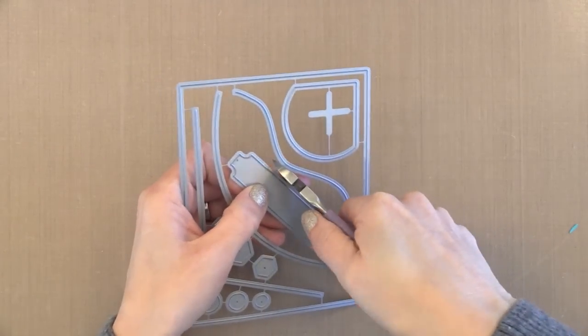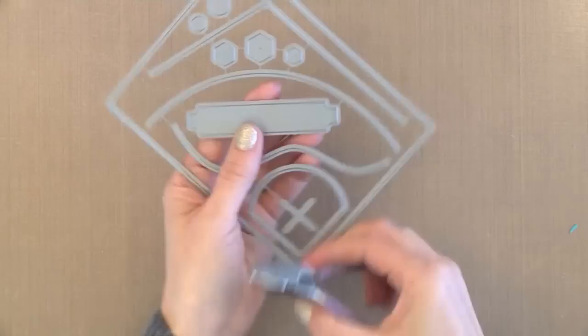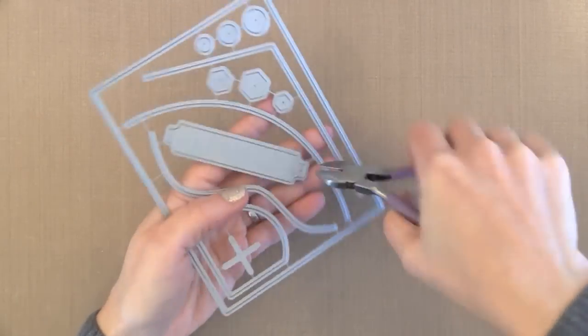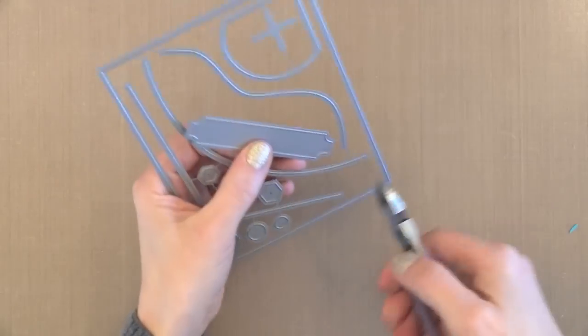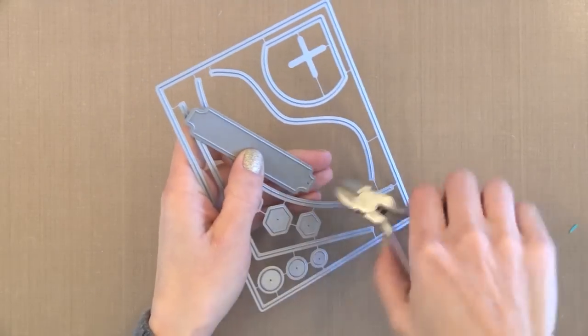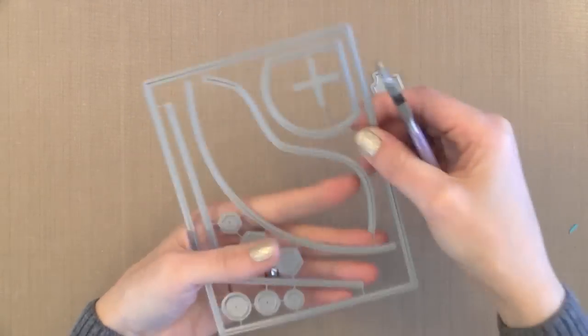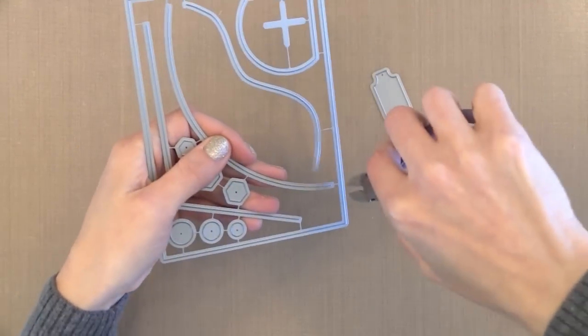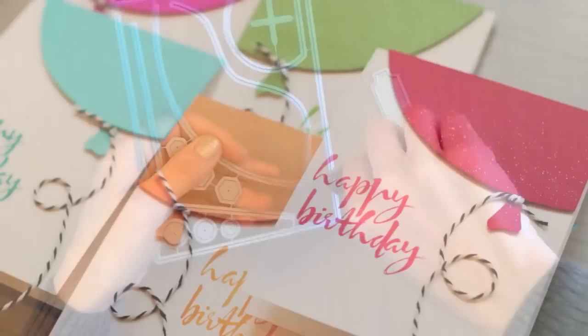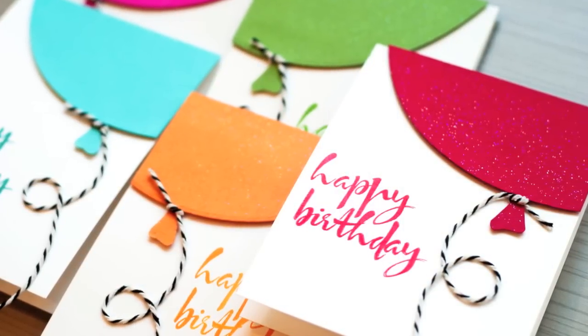This is the Avery Elle Custom Panels. Now it looks kind of odd here, all these different pieces, but there are so many things you can do with this die set. Now for this card I'm going to use the arch circle or that little arch. But the other pieces I'm going to show you what you can do with them at the end of this video. So if you stick around to the end I'm going to show you some fun things with these other die pieces. But let's go ahead and use this little arch here to create these balloon cards. If you don't have the arch you could always trace a circle to do these.